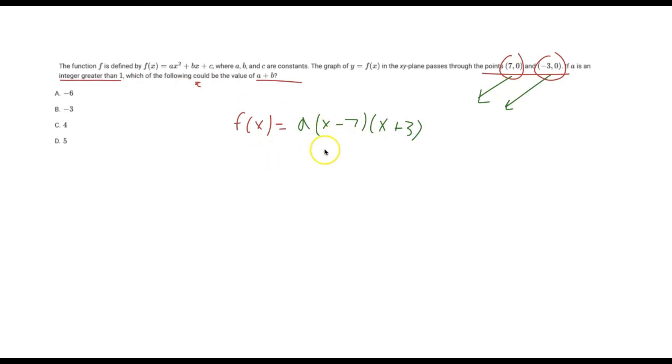But now to actually expand this out and get a value for b, what you might realize here is that we need to actually have a value for a. So it says a is an integer greater than 1. Well, what's an integer that's right above 1?